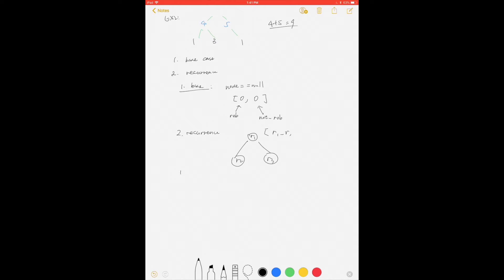r1_r and r1_nr for rob and not rob. This is r2_r and r2_nr, and r3_r and r3_nr. We already know these two values, and we want to build the value for r1.